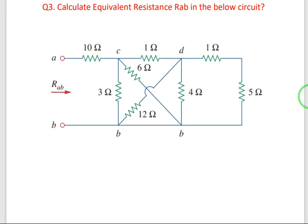Hi friends, welcome to SSJ Electrical. In this video I am going to discuss about the equivalent resistance between nodes A and B. We are going to calculate the equivalent resistance in the given circuit. There is no resistance in between these two nodes, so all this line is at the same potential.